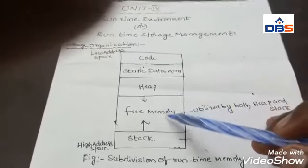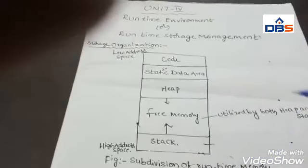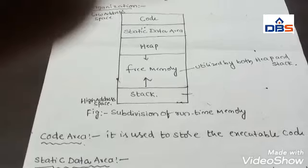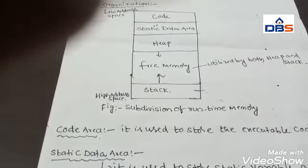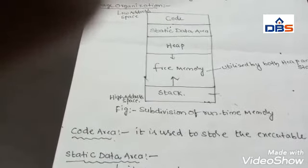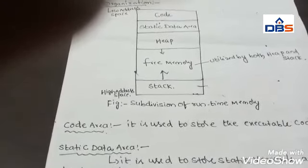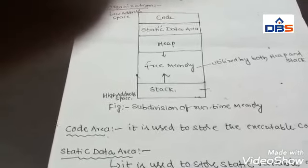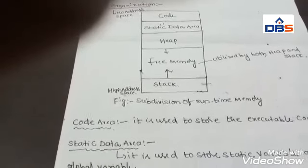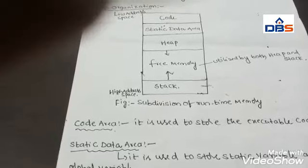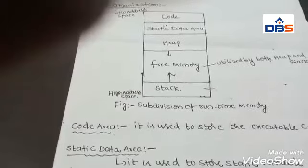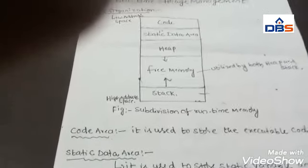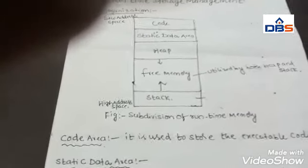This free memory can be utilized by both the heap area and the stack area. What is a code area? During compilation the size of the program is decided — before execution the size of the program is decided. The main use of the code area is it stores the executable code only. After compilation, linking happens — linking means it links the object code of several library files into a single file. The linker produces a file called an executable file. So the code area contains the target executable code only.